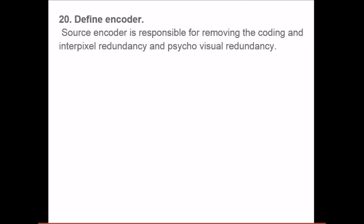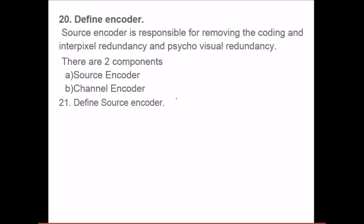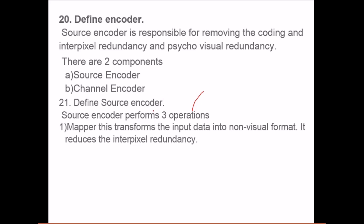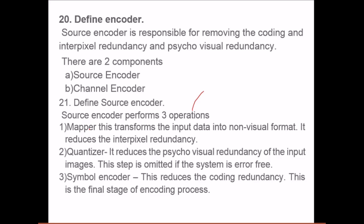Define encoder. Source encoder is responsible for removing the coding and inter-pixel redundancy and psycho-visual redundancy. There are two components: source encoder and channel encoder. What is this source encoder? Source encoder performs three operations. First, mapper - it transforms the input data into non-visual format and reduces the inter-pixel redundancy. Then quantizer - it reduces the psycho-visual redundancy of the input images. This step is omitted if the system is error-free. Then comes the symbol encoder. This reduces the coding redundancy. This is the final stage of encoding process.